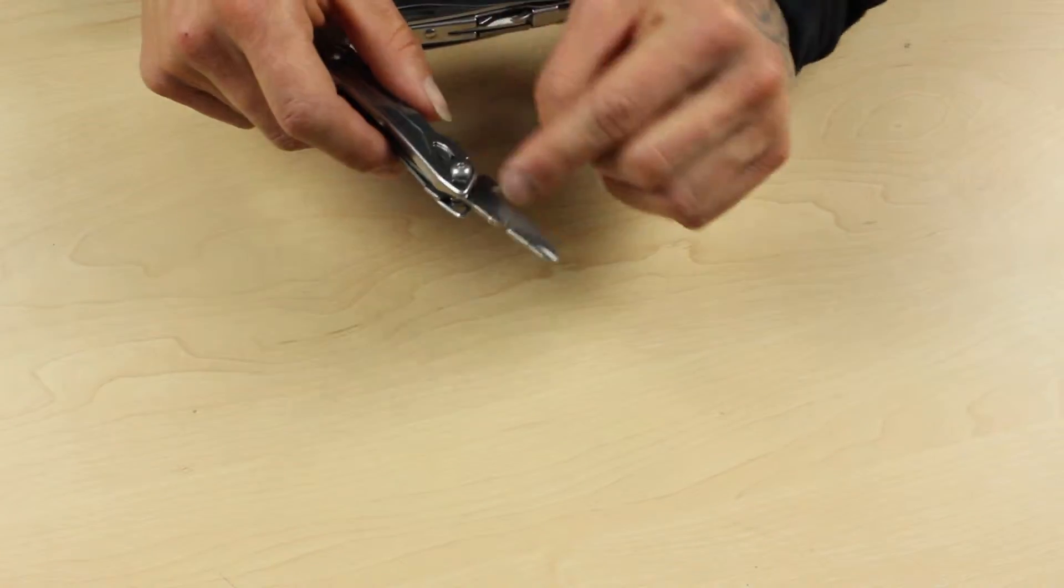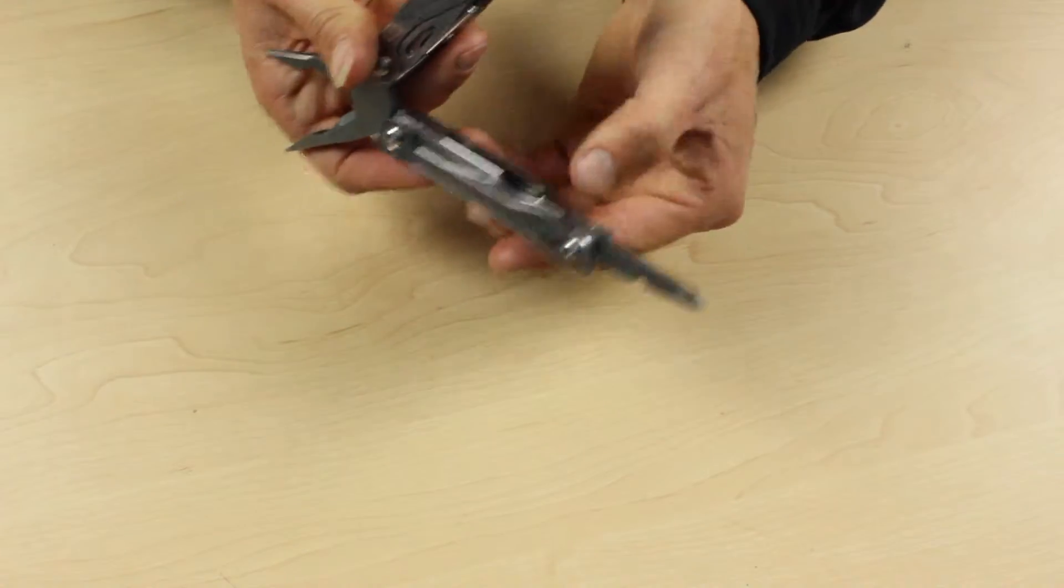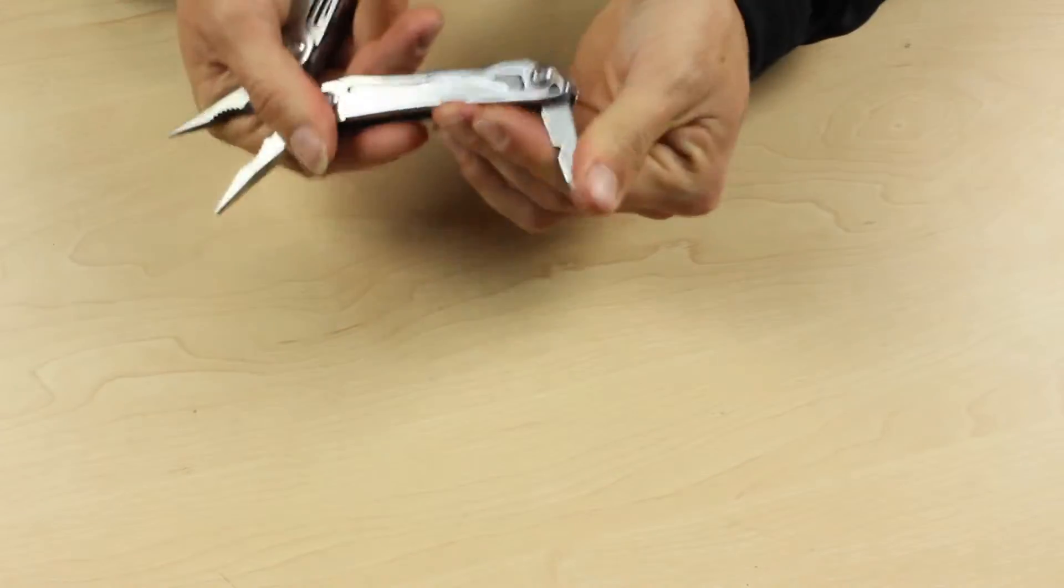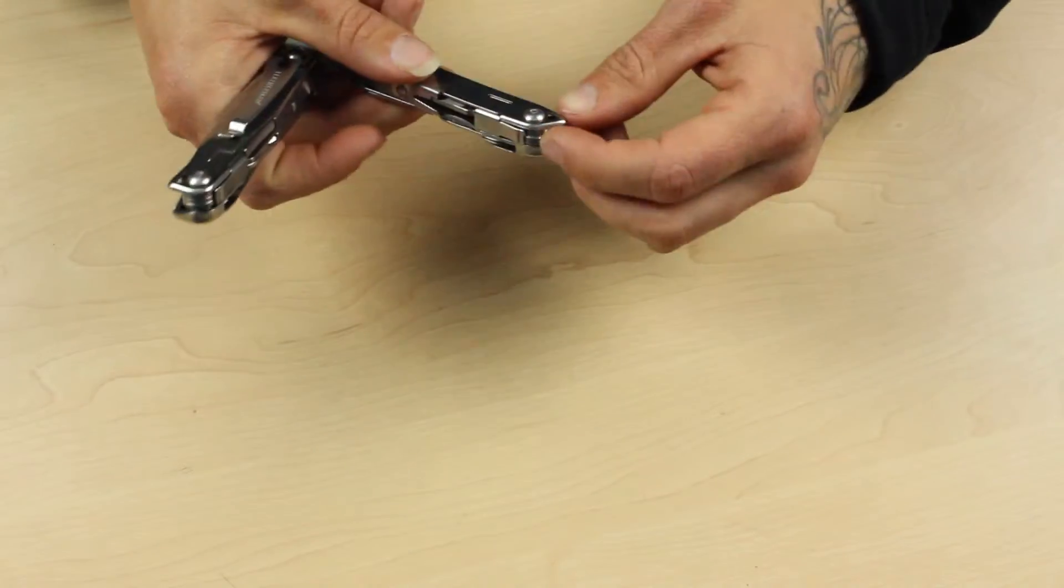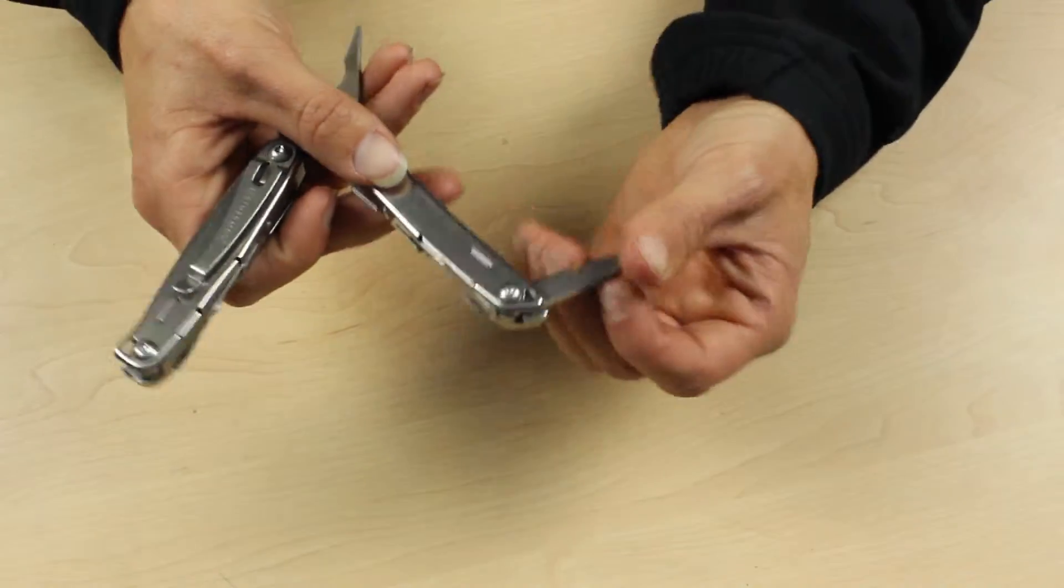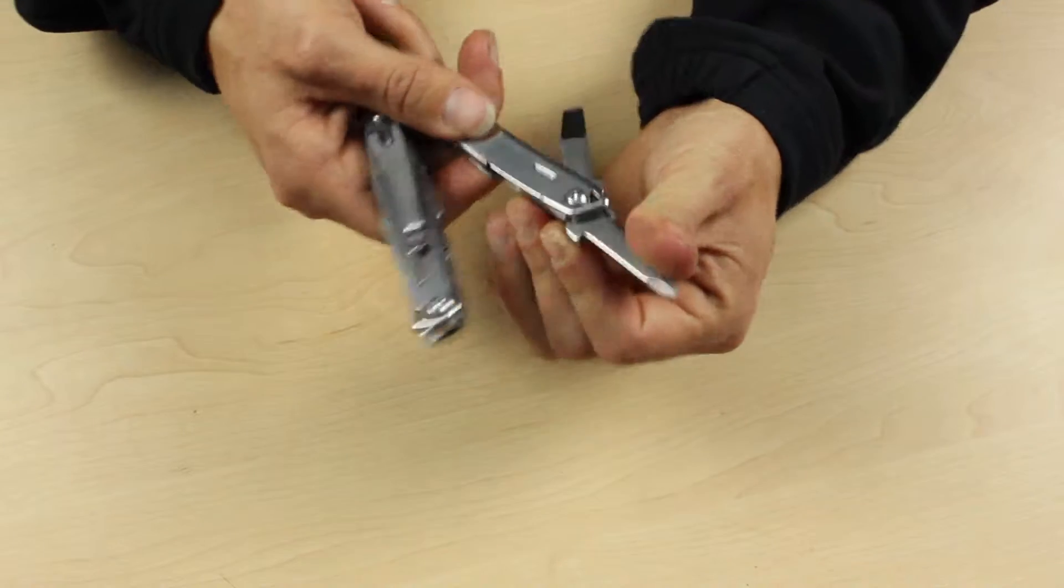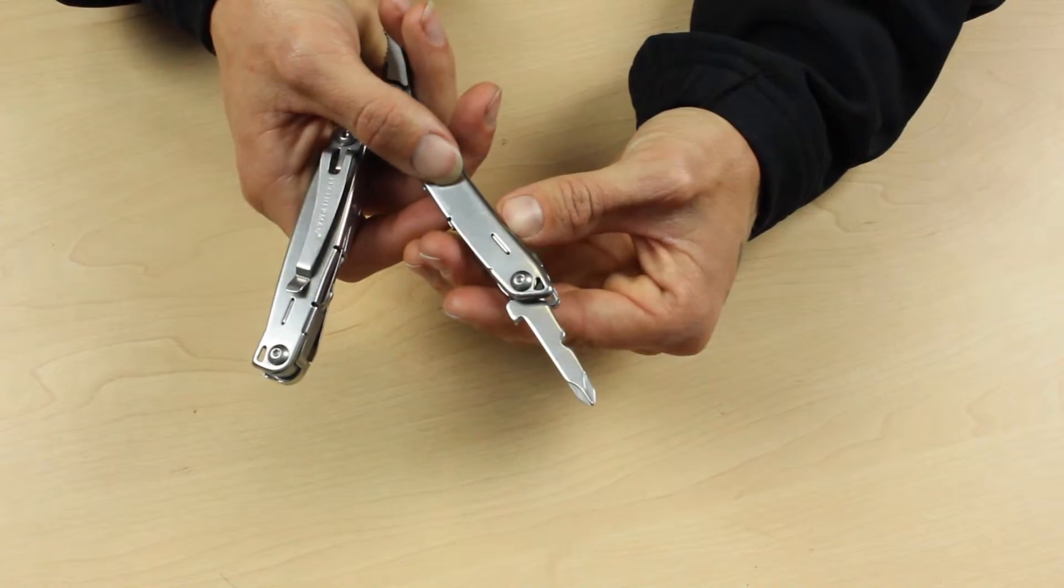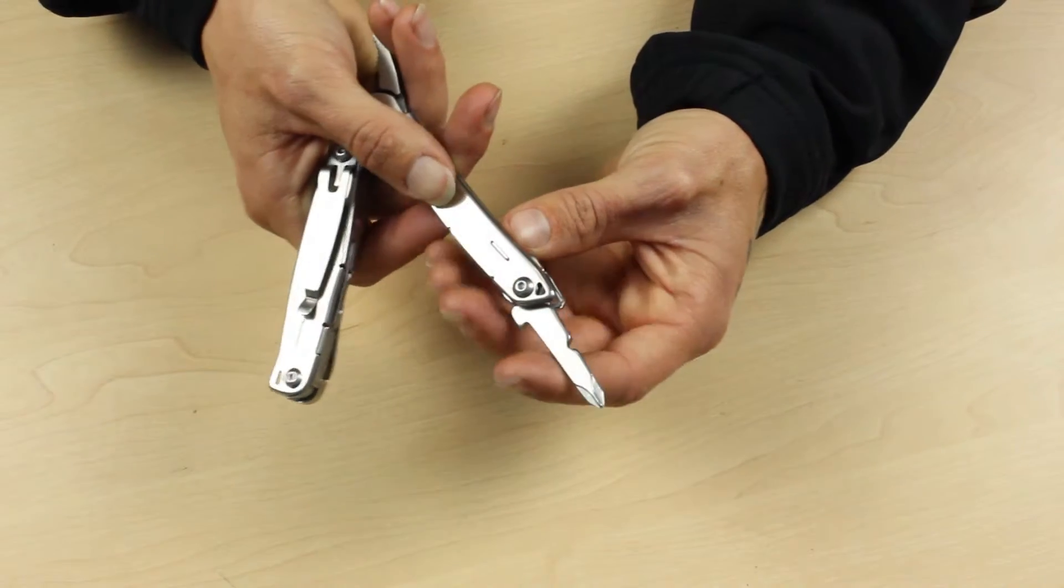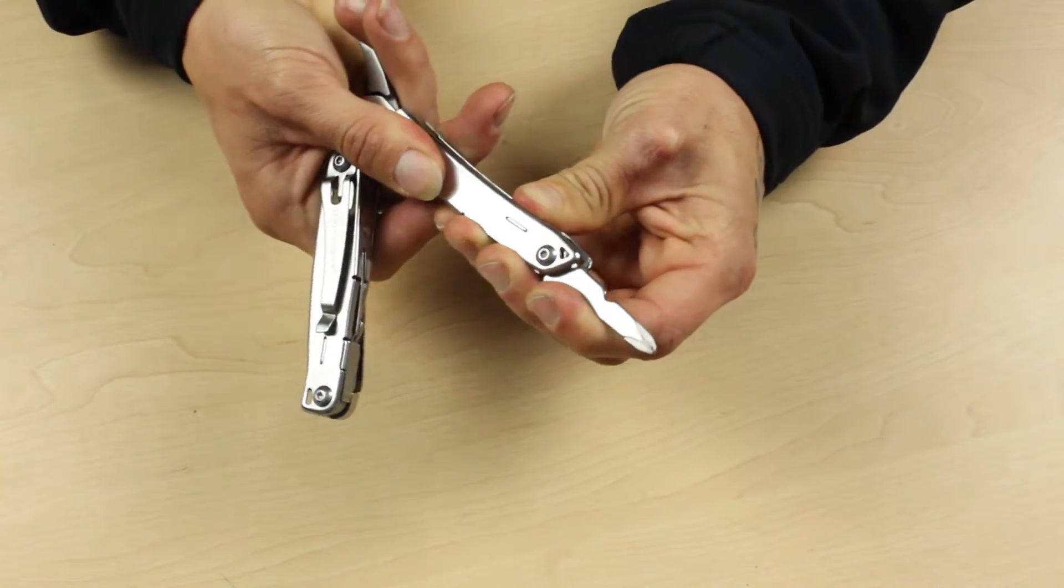One of the things to notice about the Wingman is that it doesn't have a locking mechanism at the back. It's kind of a soft lock, so it's got a groove in the base here that gets a good lock to work with. It's not going to lock as well as the Wave or the Charge, but it's still a very reliable tool.